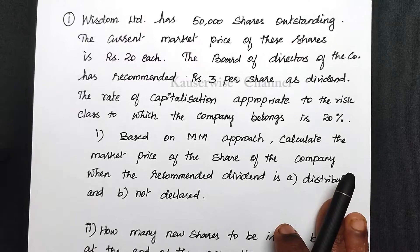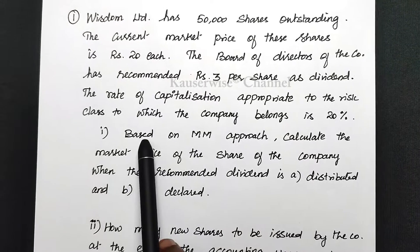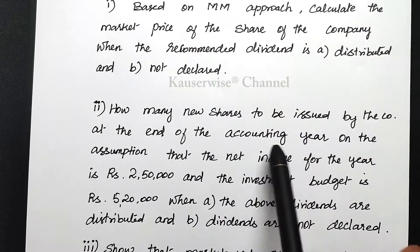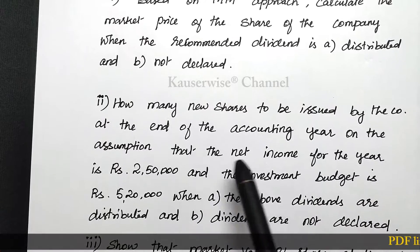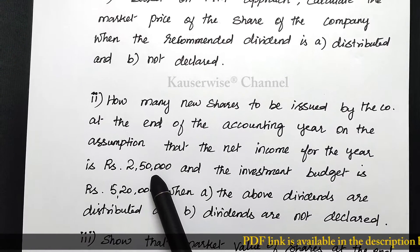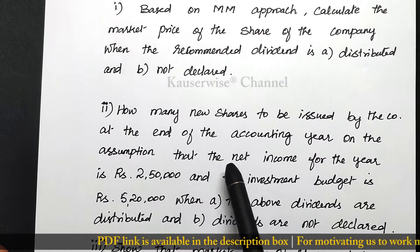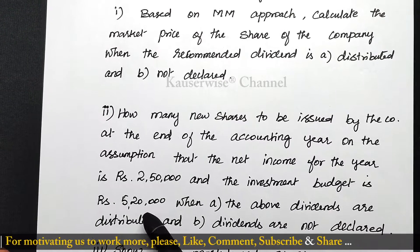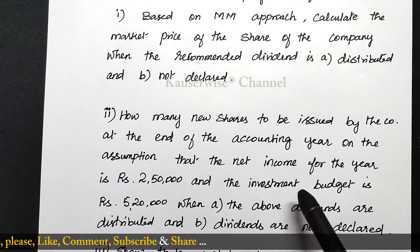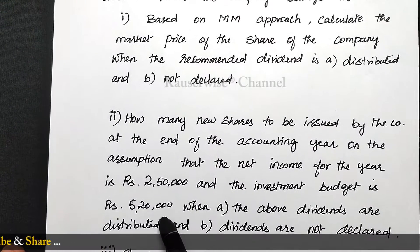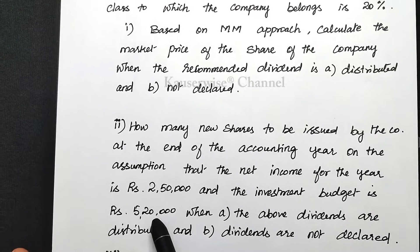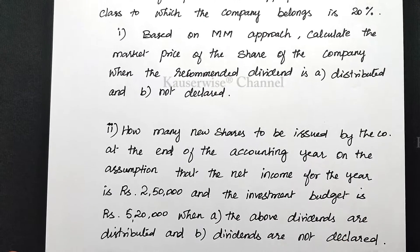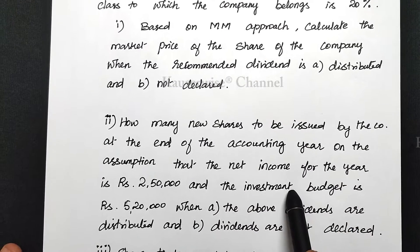The first calculation is over. Now let us see the second one: how many new shares are to be issued by the company at the end of the accounting year, on the assumption that the net income for the year is 2,50,000 and the investment budget is 5,20,000. They are asking for two options: when the above dividends are distributed, and when dividends are not declared.